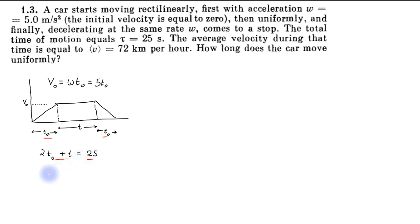Therefore we can say t₀ will be equal to (25 minus t) divided by 2. Further, it is given that the average velocity is 72 km per hour, which is nothing but 20 meters per second.